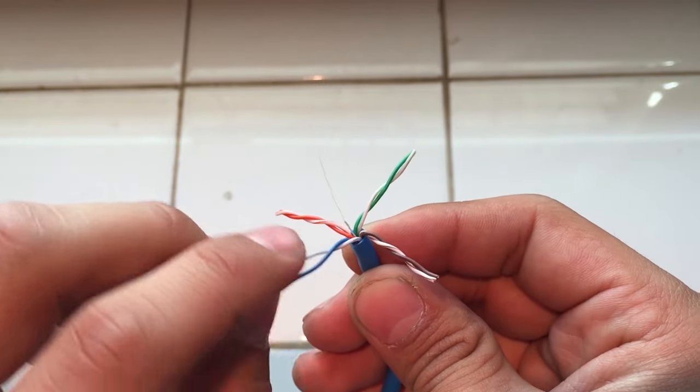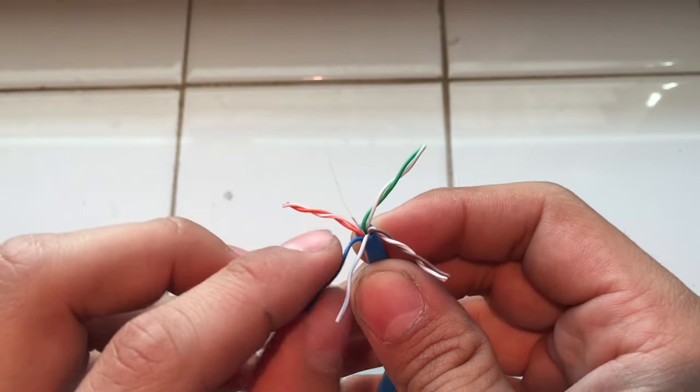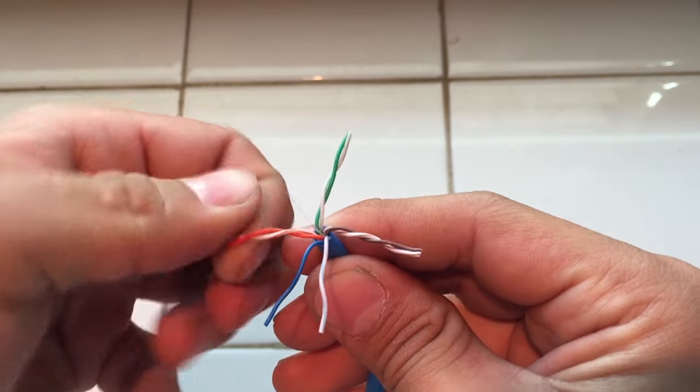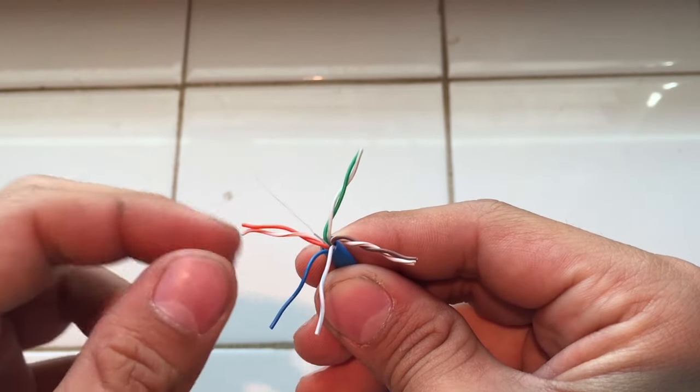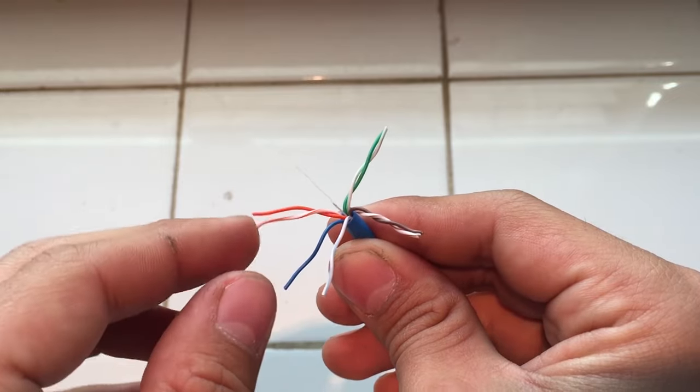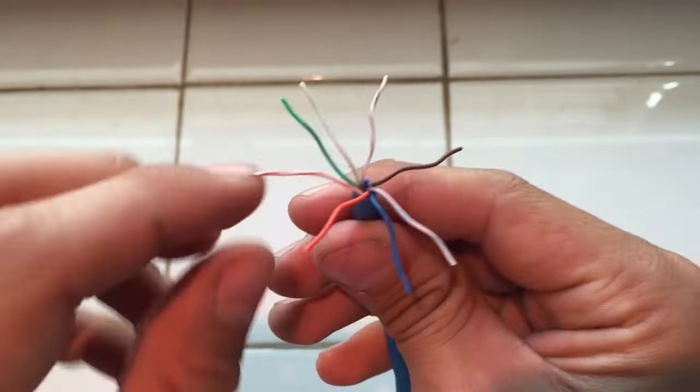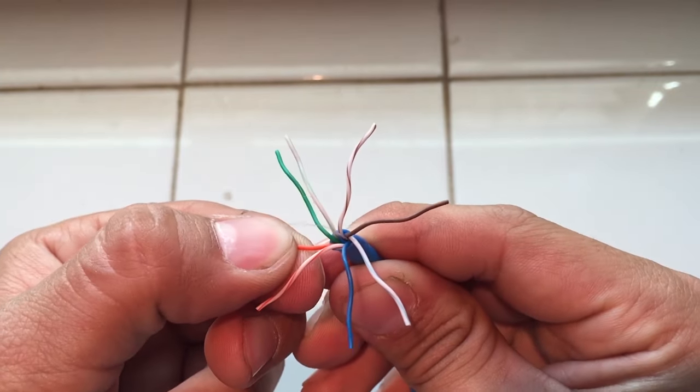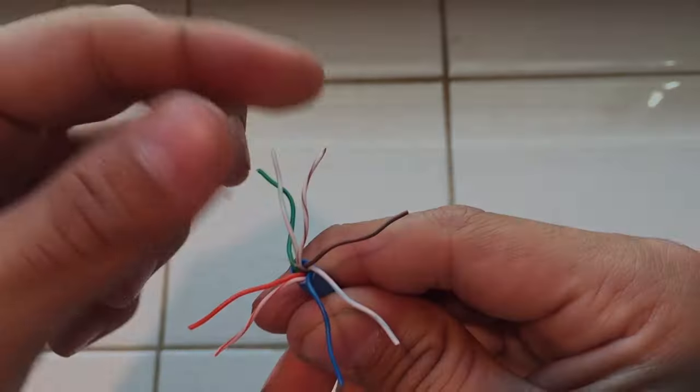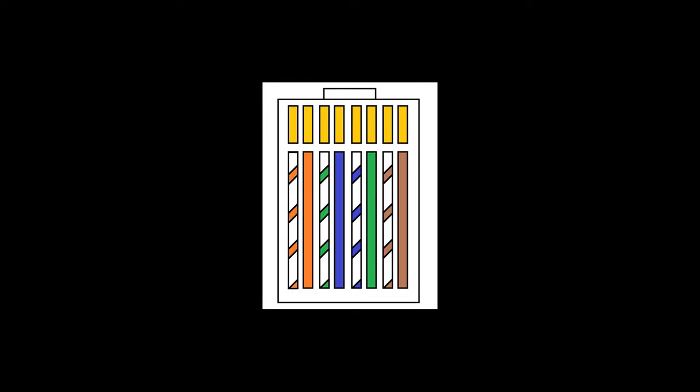Now you're going to untwist your pairs. Once your pairs are all untwisted, go ahead and put them in order. The order is going to be white with the orange stripe, orange, white with the green stripe, blue, white with the blue stripe, green, white with the brown stripe, and then brown.